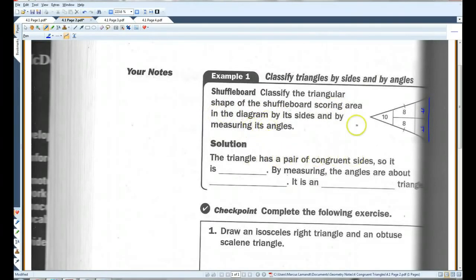Okay. The triangle has a pair of congruent sides. Notice that this side is congruent to this side as signified by this little dash. So, it is isosceles.